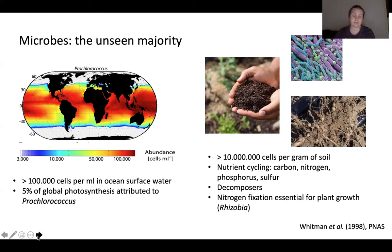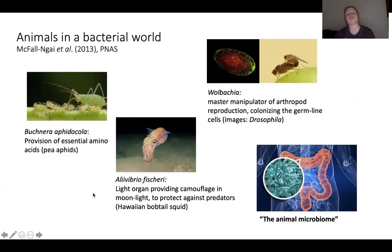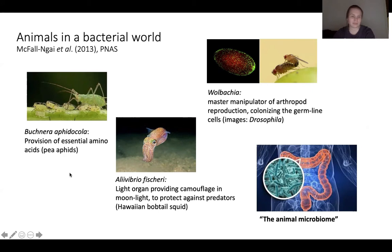Many bacteria are known to form associations with animals and plants, and I'd like to give you a few examples. Here to the left you see a lovely little family of pea aphids. Aphids can survive on a diet that consists only of plant sap, and the way they can do that is because they carry a bacterium that synthesizes the essential amino acids that they need.